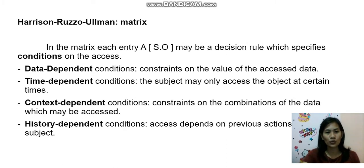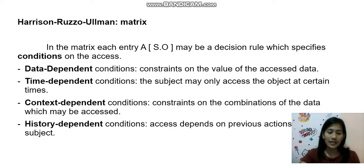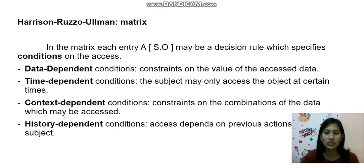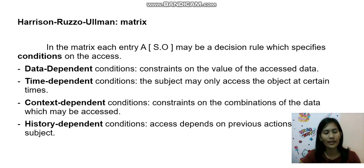The Harrison, Ruzu, and Allman matrix: in the matrix, each entry — the subject and object — may be a decision rule that specifies conditions on the access. We have here four conditions: data dependent, time dependent, context dependent, and history dependent.